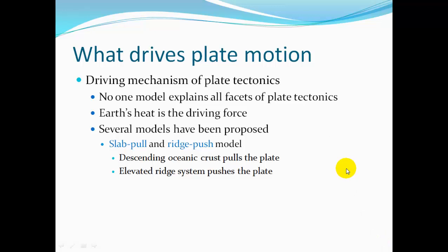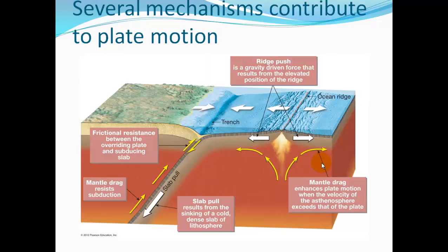What drives plate motion? This was the mechanism missing in Wegener's theory. No single model explains all facets of plate tectonics, but Earth's heat is a driving force. One model is slab pull and ridge push: the descending ocean crust pulls the plate down, while the elevated ridge system on the other side pushes the plate. So the weight of the slab is pulling it down, and the ridges are pushing the plate in the other direction.